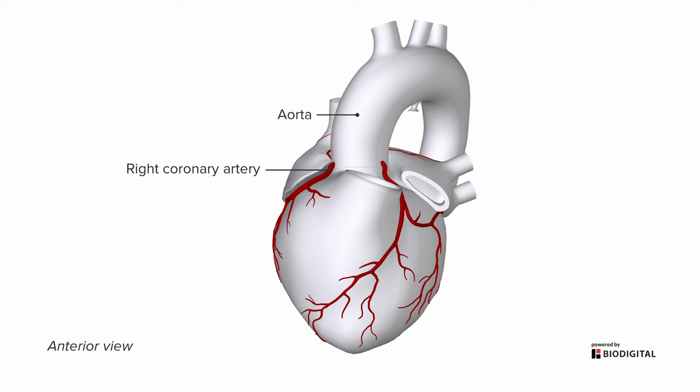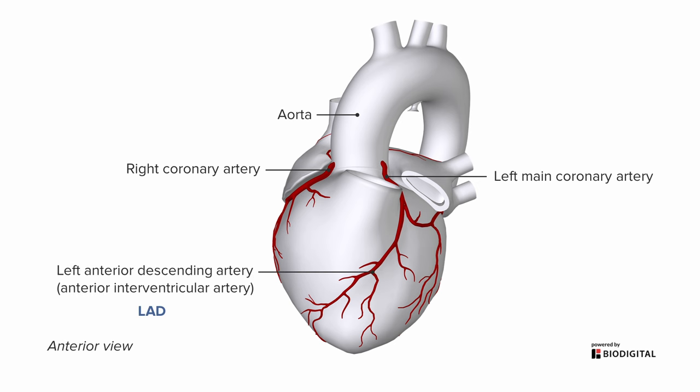On the left, it's a bit different. We have the left main coronary artery, which is pretty short — only about a centimeter or so before it branches. The first branch is going to be the left anterior descending artery, or the LAD, also known as the anterior interventricular artery because it sits along the anterior surface of the interventricular septum. The other branch goes in that groove between atrium and ventricle, mirroring the right side, and this is called the circumflex artery.